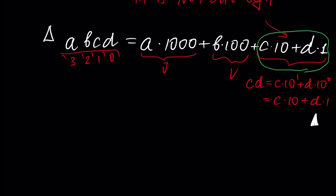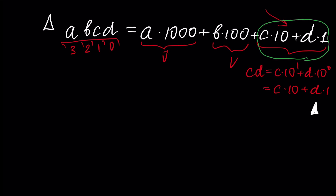We just take the last two digits and look at the number formed by those two digits. If this number is divisible by 4, or if C and D are equal to zeros — in which case this part disappears — our number will be divisible by 4 because all other terms are also divisible by 4. So it's obvious. Let's go further.